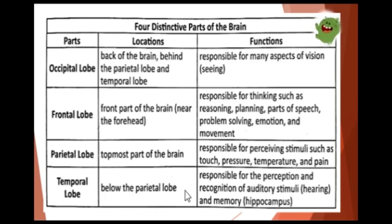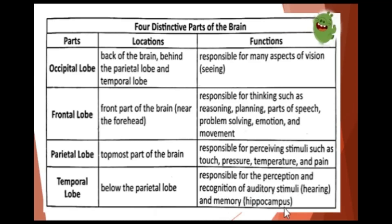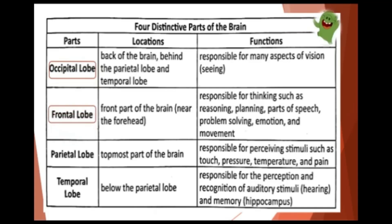The temporal lobe is responsible for the perception and recognition of auditory stimuli — hearing and memory, including the hippocampus. Again, the four distinctive parts of the brain are: occipital lobe, frontal lobe, parietal lobe, and temporal lobe.